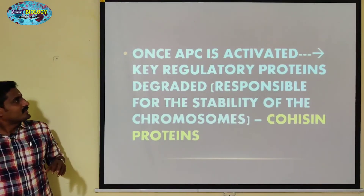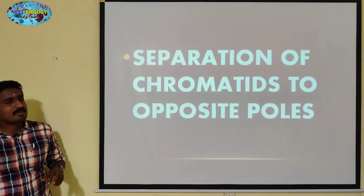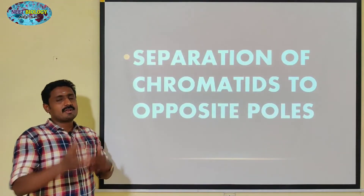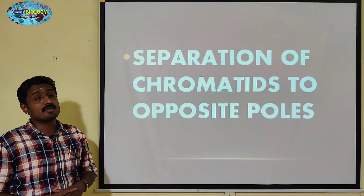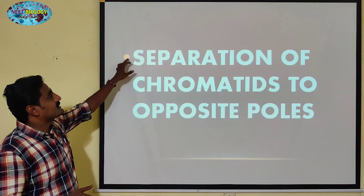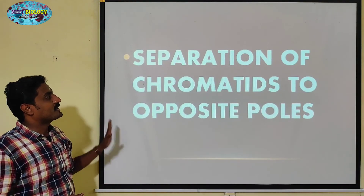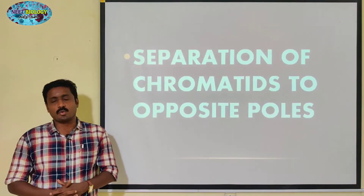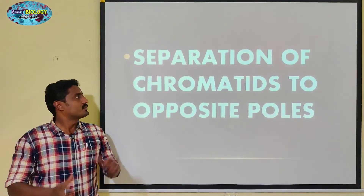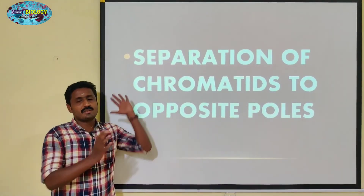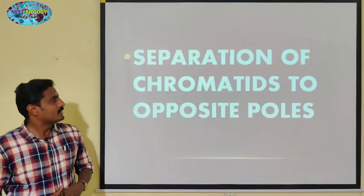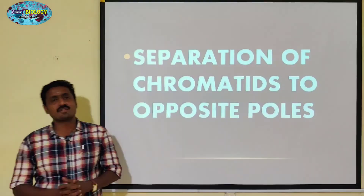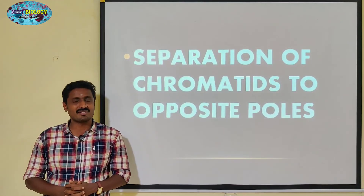Looking at the diagram, the cohesin will break — the cohesin will be degraded. The separation of chromatids then takes place and they are moved towards the opposite poles. If you are interested in this video, please subscribe to our channel.